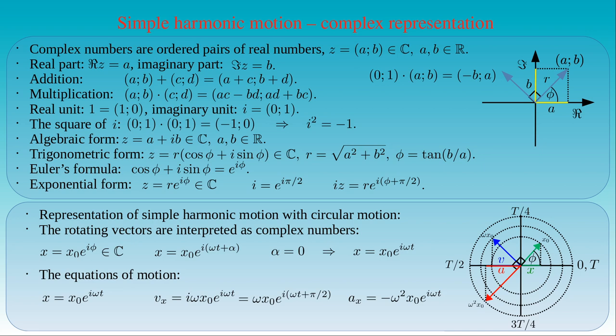These equations give the complex representation of the equations of motion for simple harmonic motion — we say these are the equations of motion in the frequency domain. If we take the real parts of these equations, we obtain the equations of motion in the time domain: the amplitude is x0 times cosine ωt, the velocity is ω times x0 times sine ωt, and the acceleration can be written as minus ω² times x0 times cosine ωt. If we compare these equations with the equations presented earlier, we see that they are shifted by a phase constant of 90 degrees. However, the phase constant has no importance in the kinematic description of simple harmonic motion, so these equations represent the same type of motion.